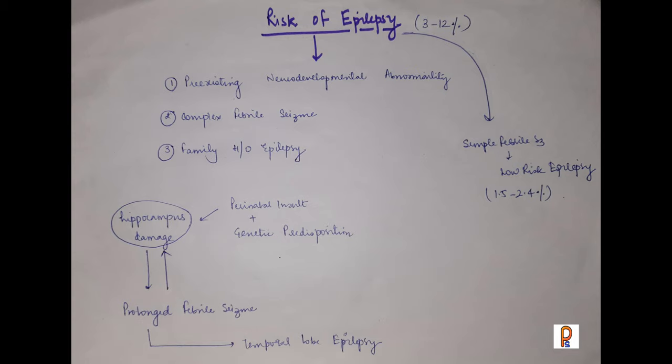Other risk factors include perinatal insult or genetic predisposition, which can cause hippocampal damage. Prolonged febrile seizures can further lead to temporal lobe epilepsy. Children who have prolonged febrile seizures are at risk of hippocampal damage and subsequent temporal lobe epilepsy.